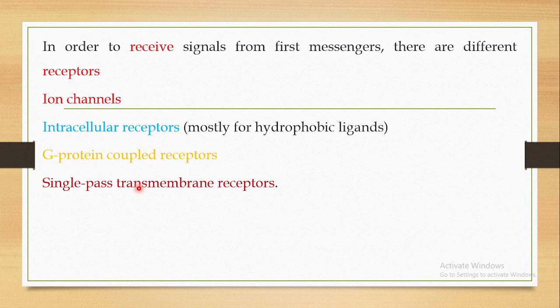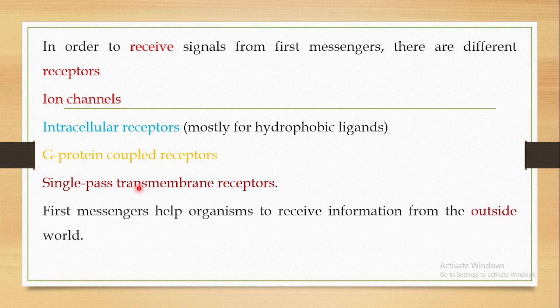What these first messengers do is help the organism receive information from the outside world. Because of the hydrophilic nature of these first messengers in most cases, they are not able to enter into the cell. Therefore, they use receptors on the surface of the cell to communicate their message to the interior of the cell. So these are the first messengers.